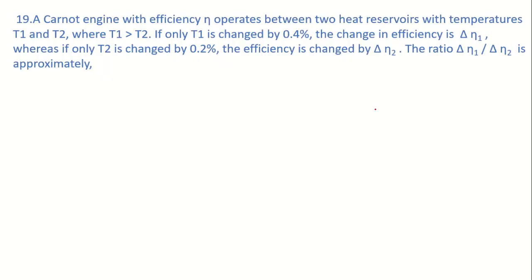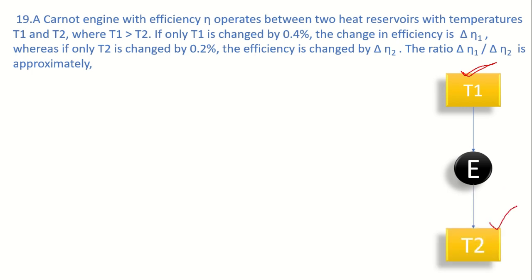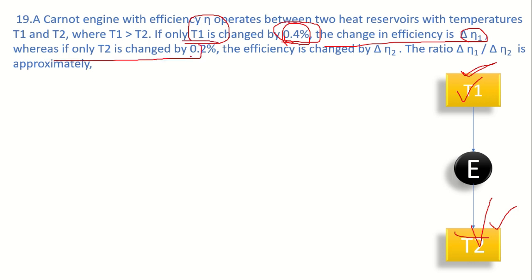The next question involves a Carnot engine operating between two heat reservoirs at temperatures T1 and T2, where T1 is greater than T2, so heat flows from T1 to T2. If T1 is changed by 0.4% the efficiency changes by delta-efficiency-1, and if T2 is changed by 0.2% the efficiency changes by delta-efficiency-2. We must find the ratio delta-efficiency-1 to delta-efficiency-2.